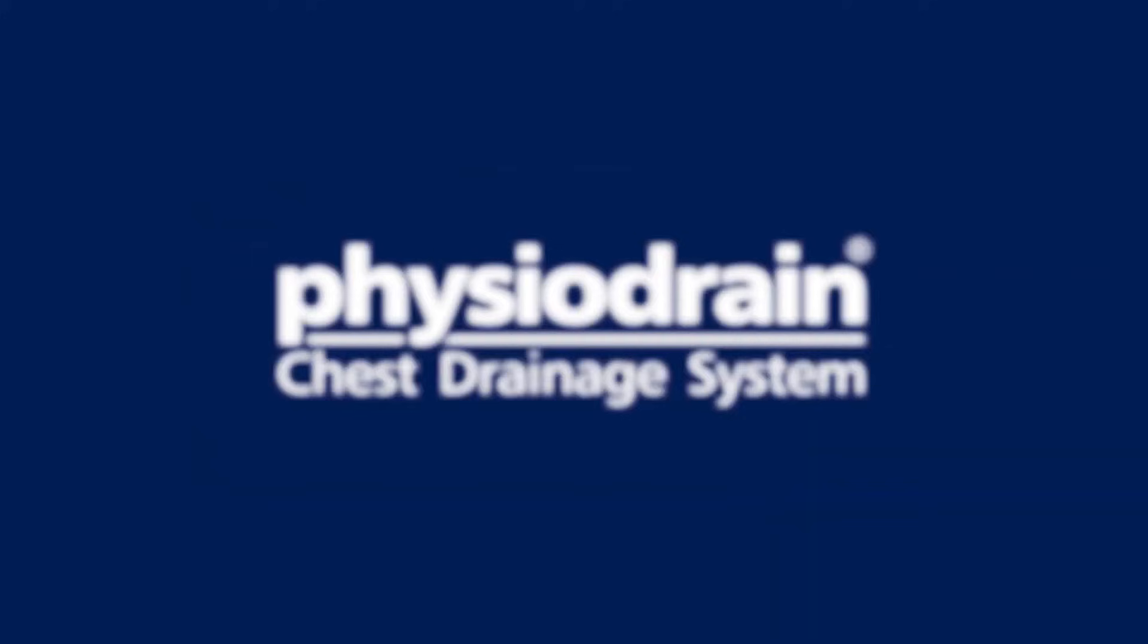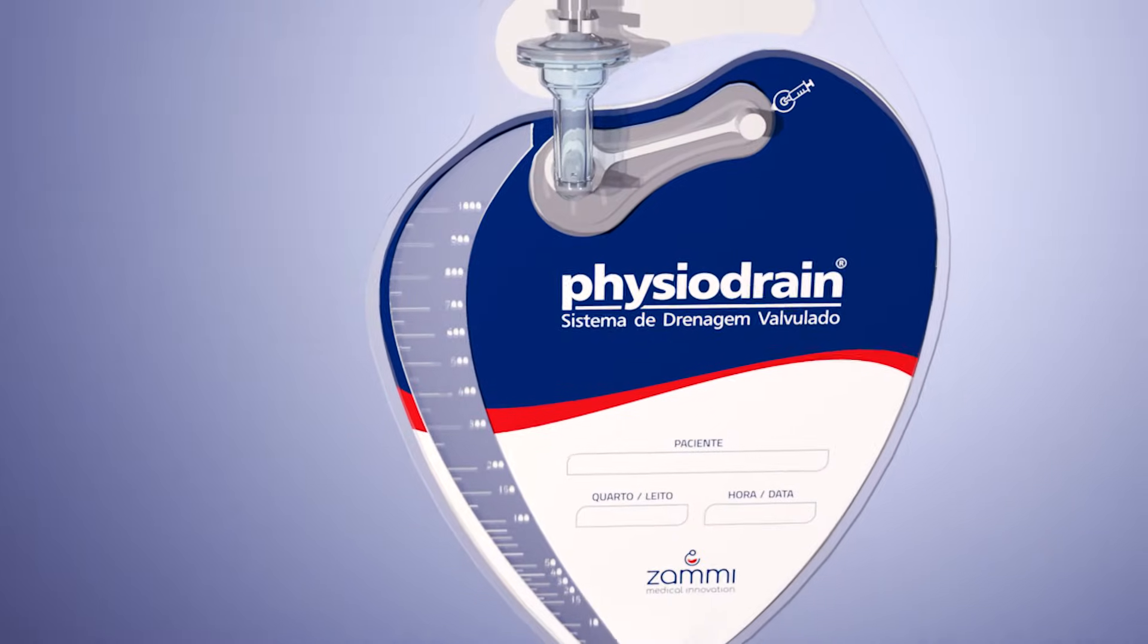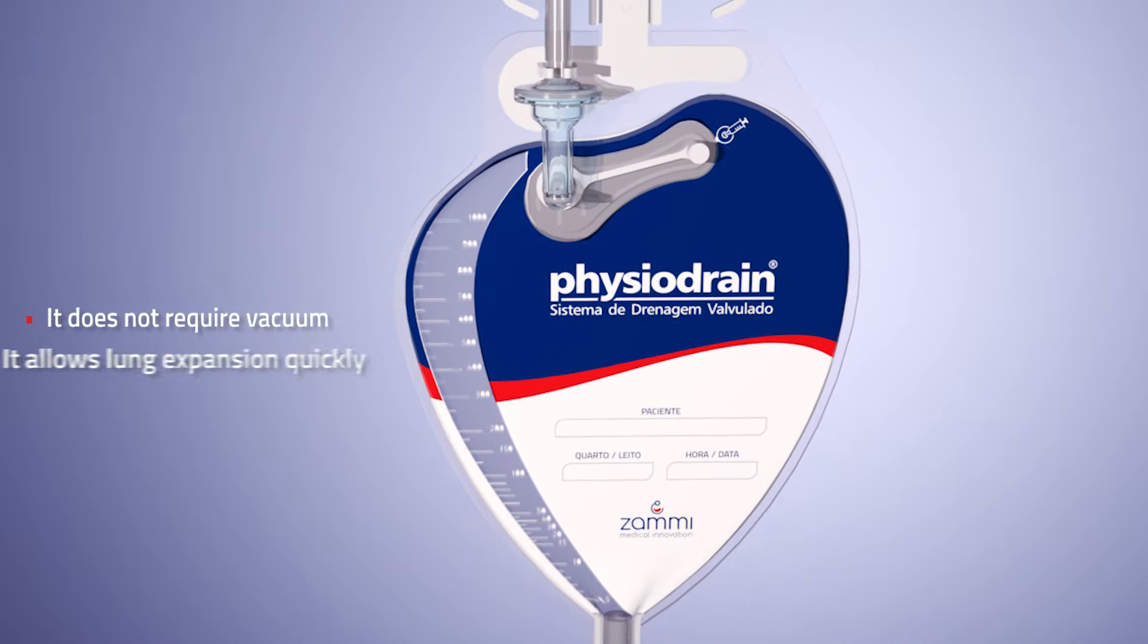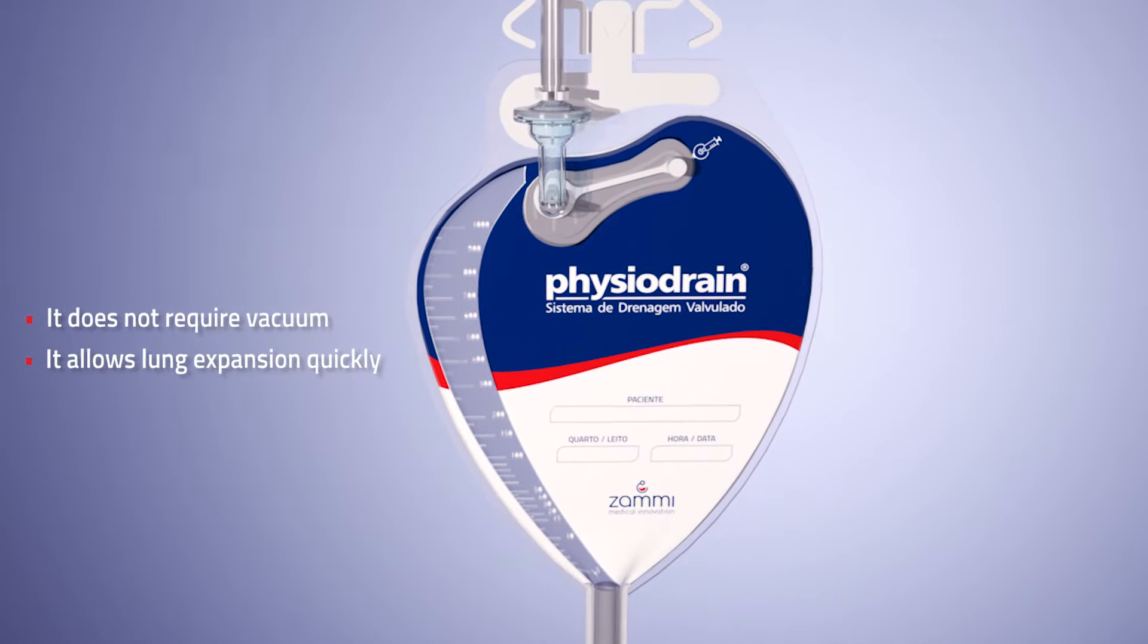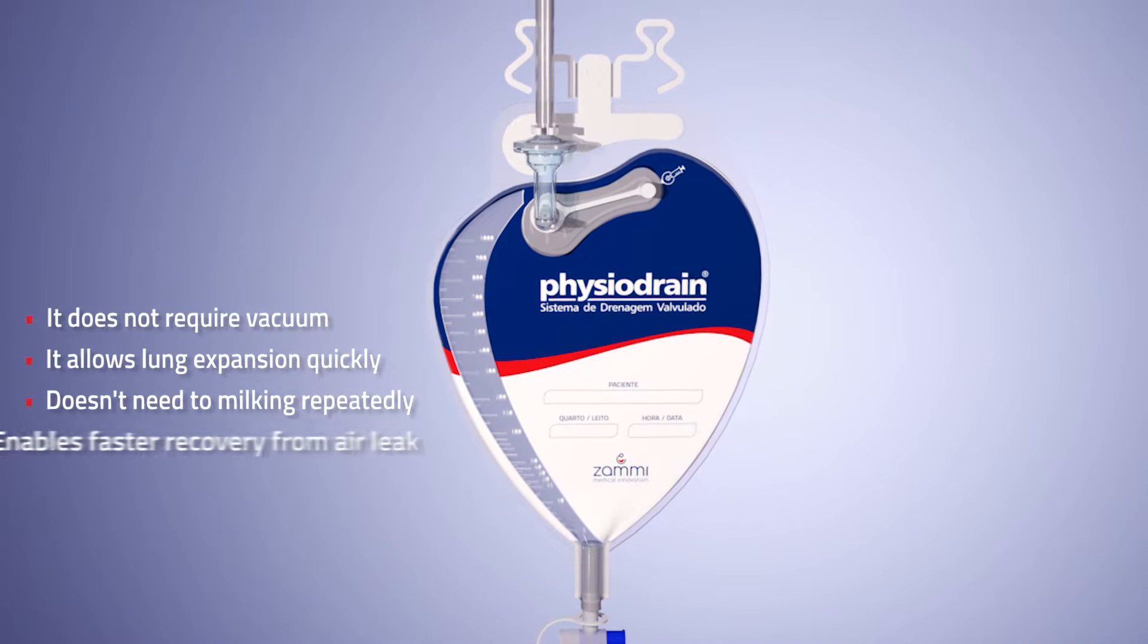The purpose of this video is to explain the working principle of physiodrain and why it has the following characteristics: it does not require vacuum, it allows the lung to expand quickly, doesn't need to be milked repeatedly, and enables faster recovery from air leak.